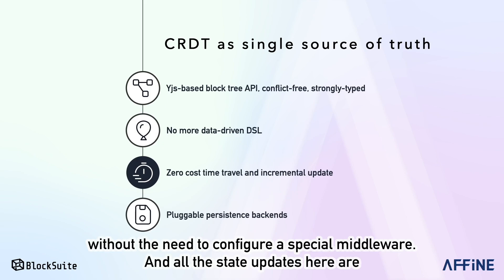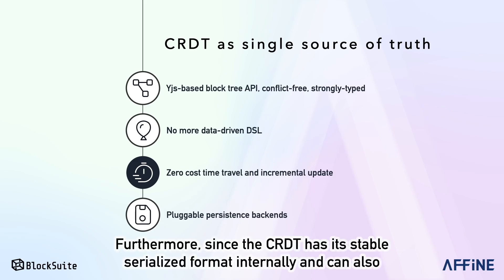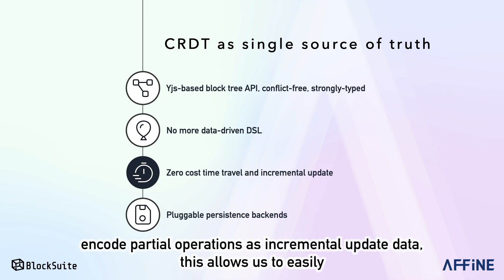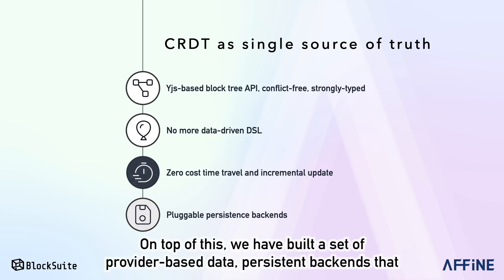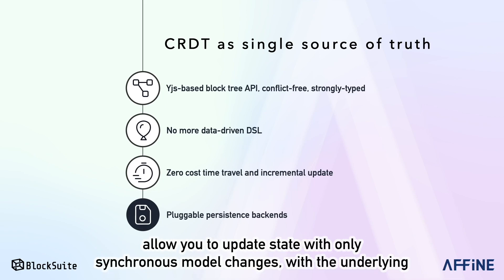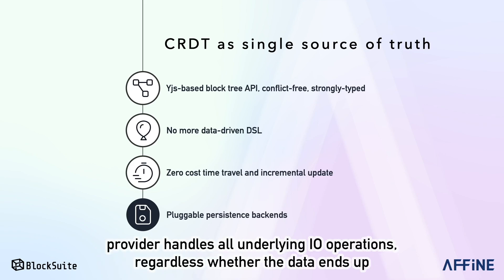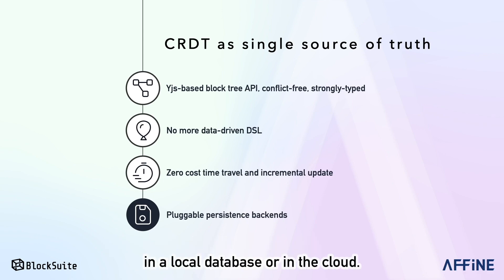And all the state updates here are incremental by design. Furthermore, since CRDT has its stable serialized format internally and can also encode partial operations as incremental update data, this allows us to easily distribute changes on the network and local storage. On top of this, we have built a set of provider-based data-persistent backends that allow you to update states with only synchronous model changes, which the underlying provider handles all I/O operations, regardless of whether the data ends up in the local database or in the cloud.